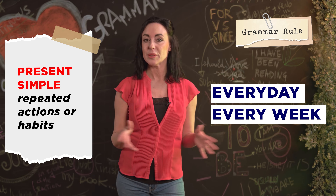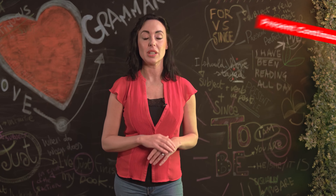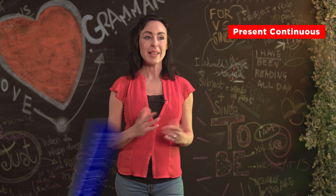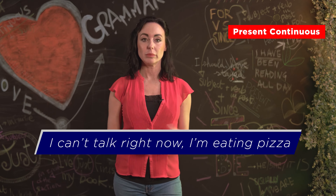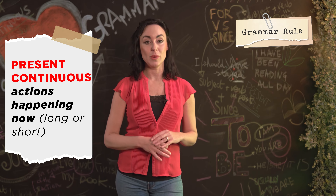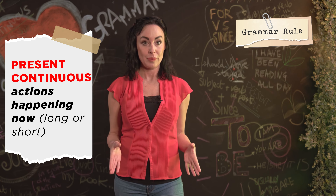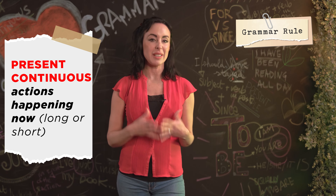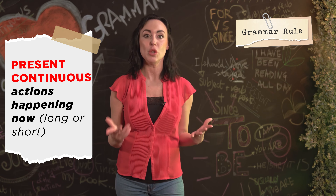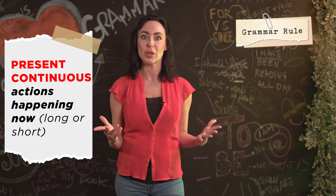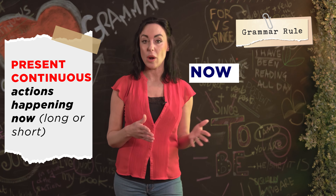We often use the present simple with frequency adverbs like 'usually,' 'always,' 'sometimes,' or phrases like 'every day' or 'every week.' Now let's look at an example of the present continuous: 'I can't talk right now, I'm eating pizza.' We use present continuous to talk about actions which are happening now — these can be short actions like eating pizza or longer ones.